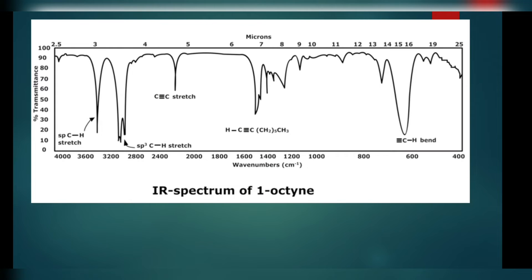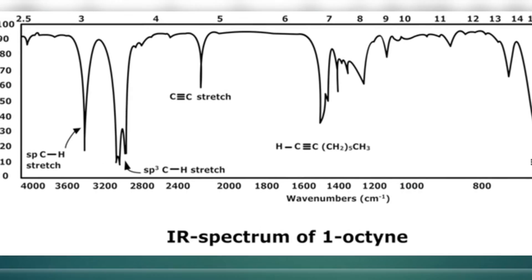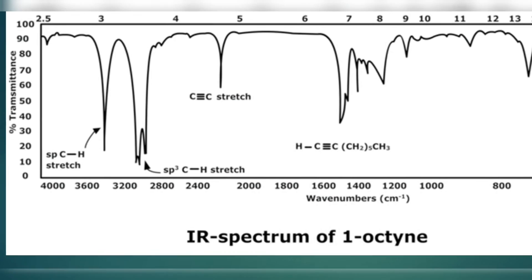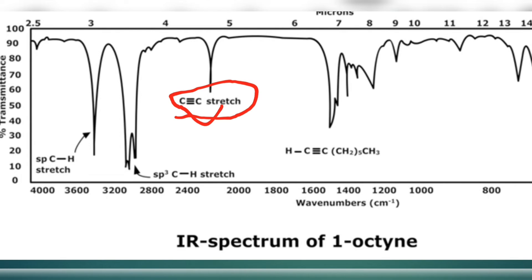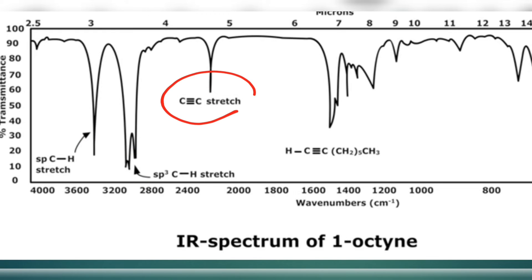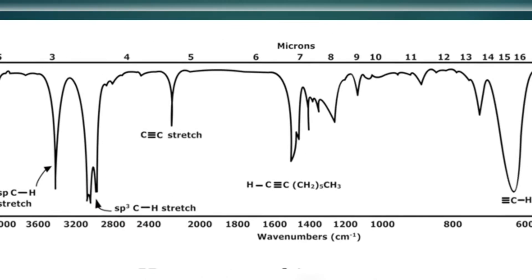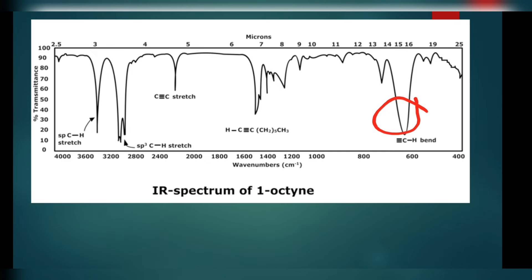Now, in the case where we have a C≡C triple bond, the C≡C stretch occurs at around 2200. Here we have an sp3 C-H stretch at 3000 and an sp C-H stretch at around 3500. We also have a long chain and a peak indicating a triple bond C-H bend. Combining all these indications, the molecule is 1-octyne.